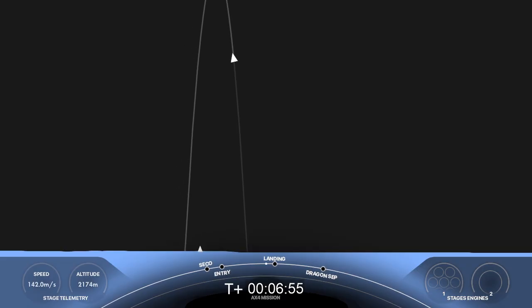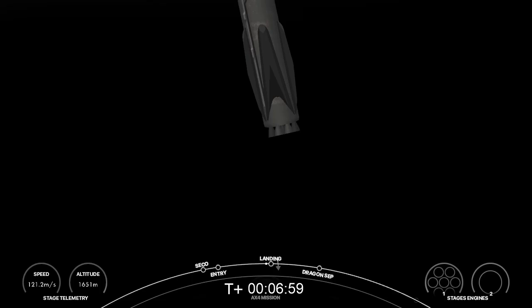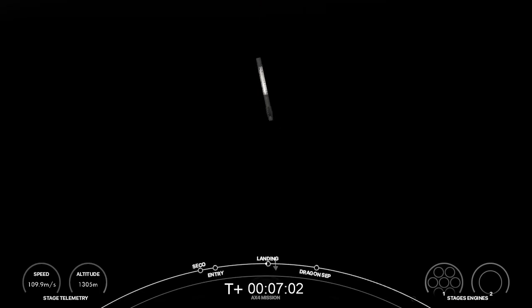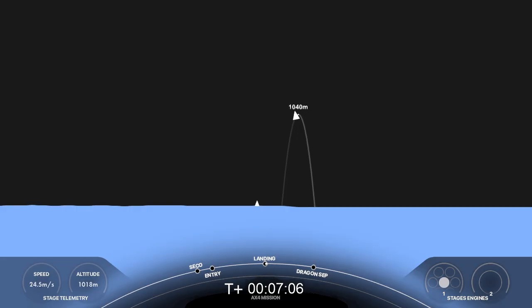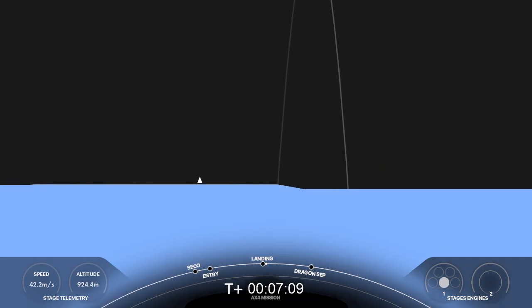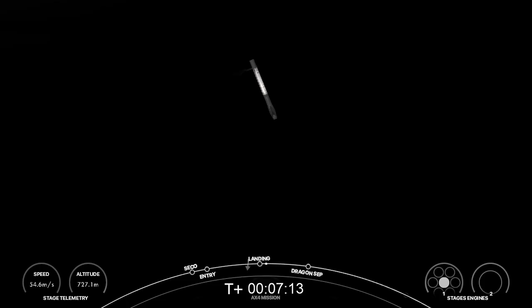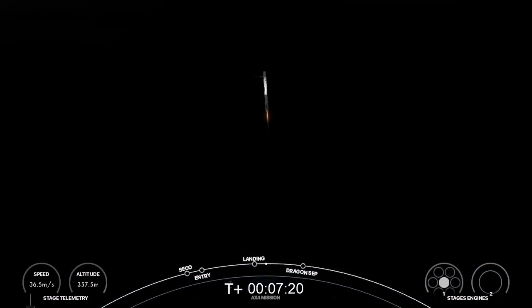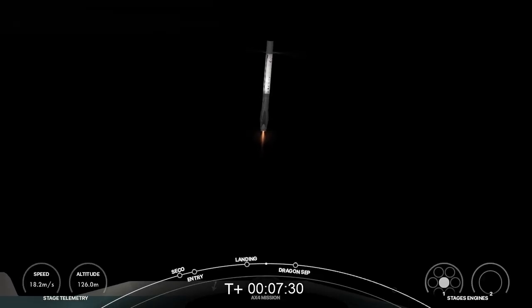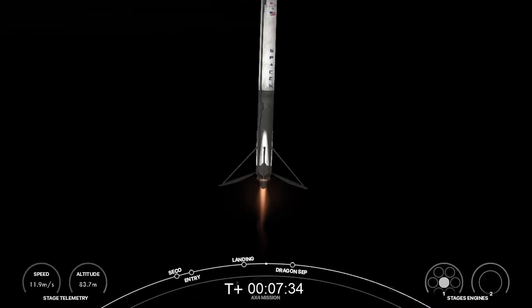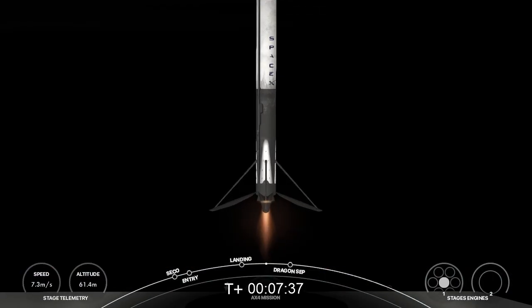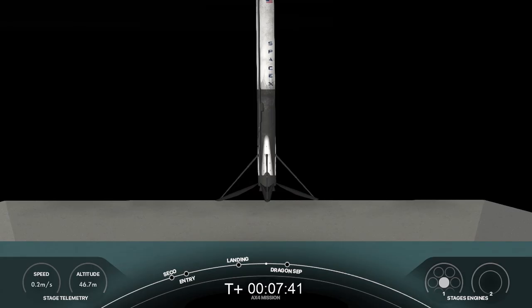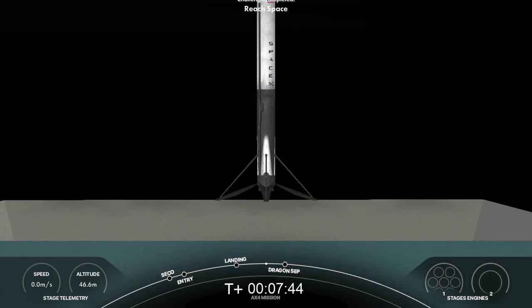Stage one transonic. Confirmation that stage one is now transonic on its way back to LZ-1, which is just about nine miles away from our liftoff location today. LZ-1, of course, is the site of the first successful landing attempt, and hopefully it will be the second time that this particular booster sticks its landing. Seeing those actuating grid fins. Stage one landing leg deploy. Stage two FTS is safe. Stage one landing confirmed. That was a picture perfect landing. Absolutely stunning.